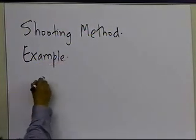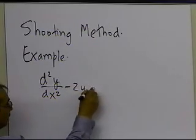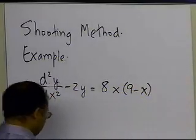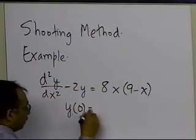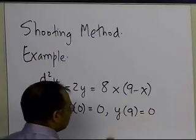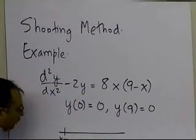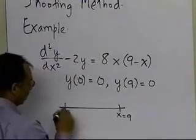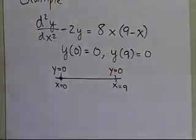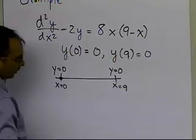For example, somebody tells us that d²y/dx² minus 2y is equal to 8x(9 minus x), and you are given the boundary values y(0) equal to 0 and y(9) equal to 0. So the two boundaries are x equal to 0 and x equal to 9, with the value of y being 0 at both ends. What we're asked to do is find the values of y at points going from 0 to 9.